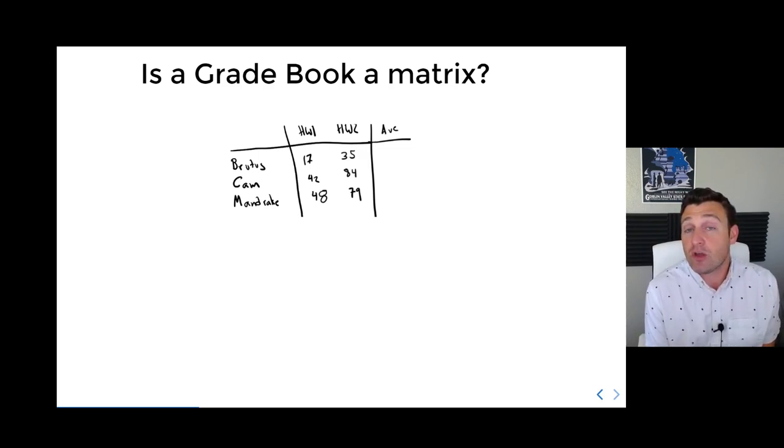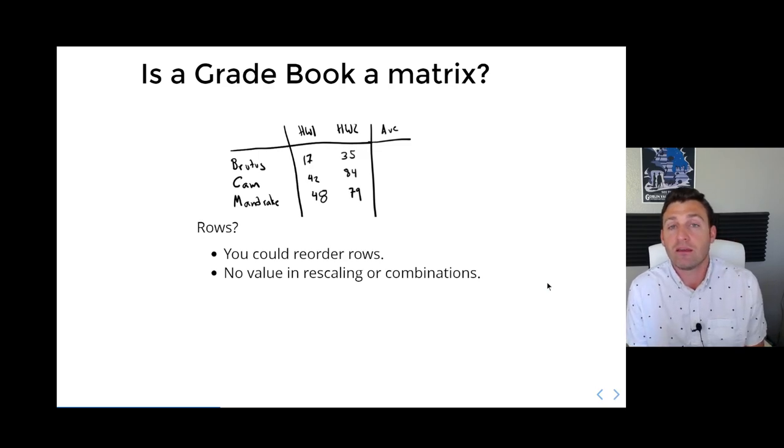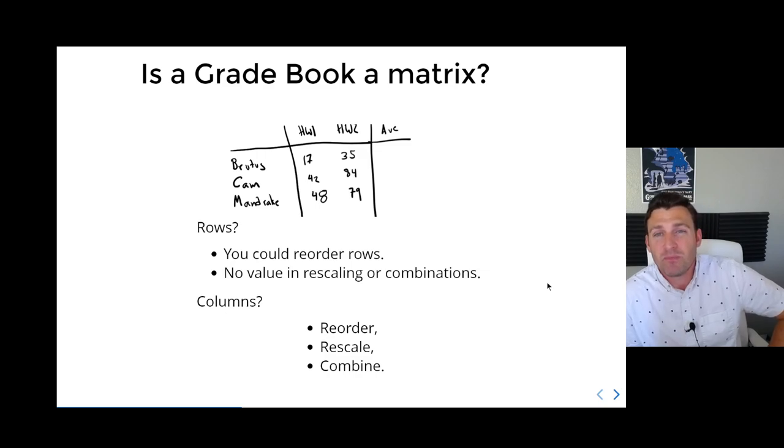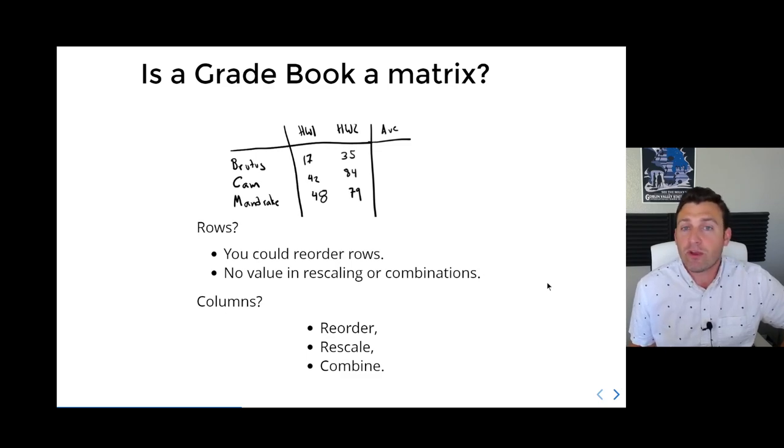It is naturally a linear combination. So it's hopefully evident at this point that if we do column operations, we are seeing the information in a linear way. The rows, however, do not let us do as much. We wouldn't really think of taking Cam the Ram and making a linear combination with Brutus Buckeye—it's a strange kind of creature you'd have to create from that sort of combination. So we refrain from treating this axis as being relevant to linear algebra.